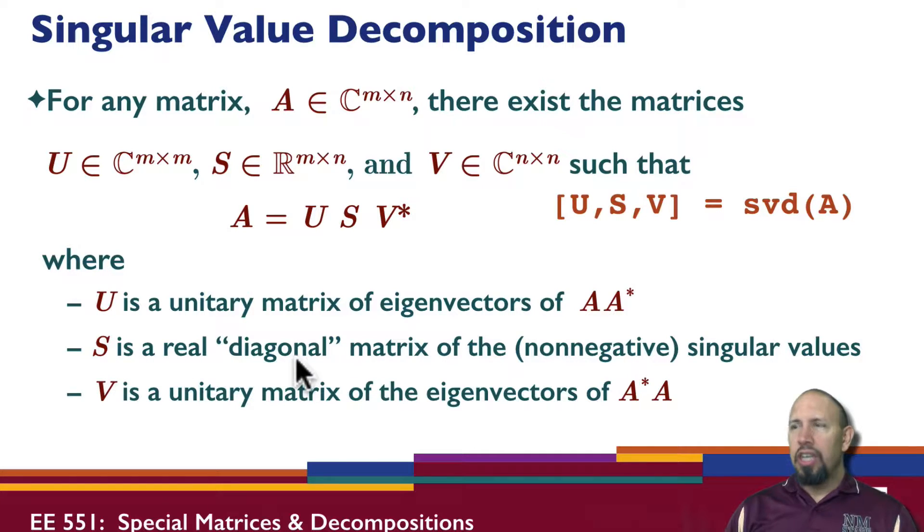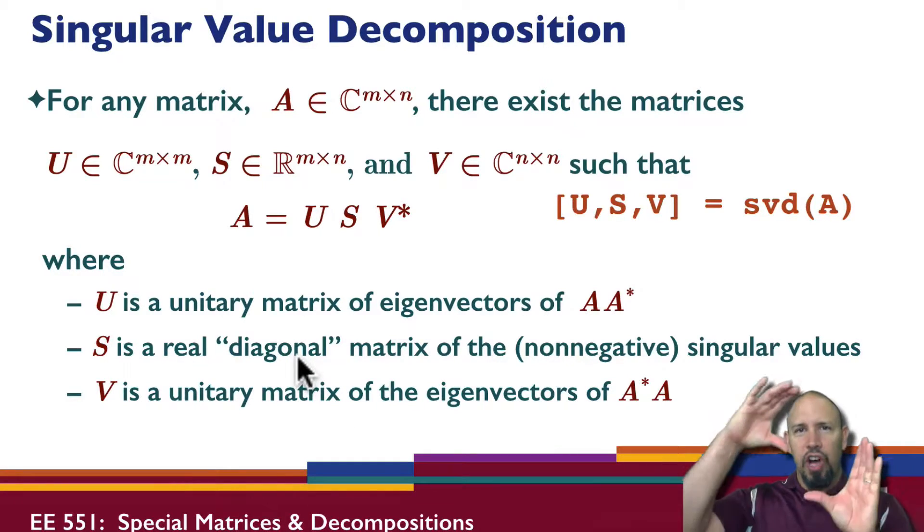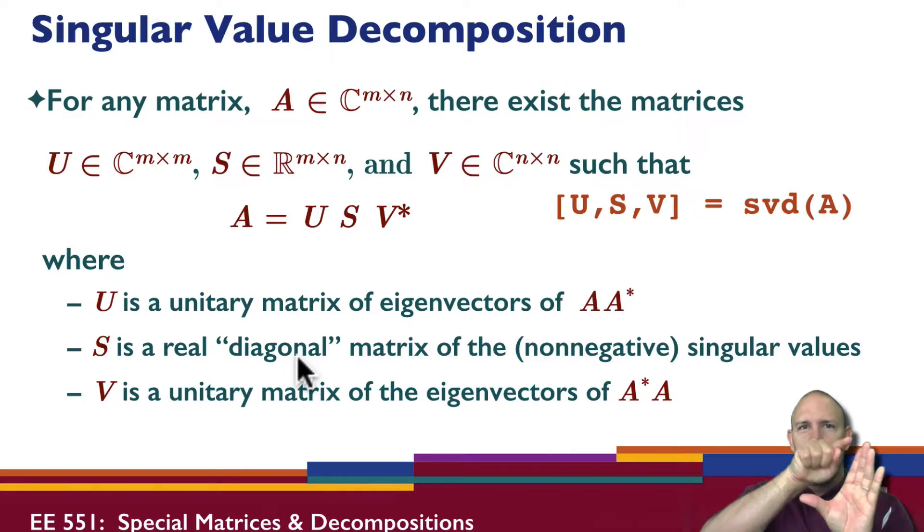S is a real diagonal matrix of the non-negative singular values. So by diagonal, keep in mind, S itself is not square. So if it's tall and thin, it's only diagonal as far as it can go. There will be zeros down at the bottom, but that's how S is defined. And then V is also a unitary matrix of the eigenvalues of A adjoint times A. So notice that these two are very similar to each other, but clearly different, and A adjoint A will be a square matrix.